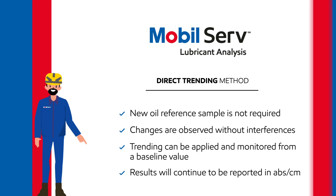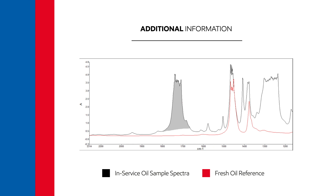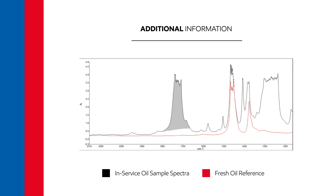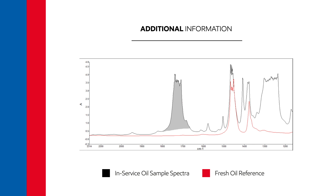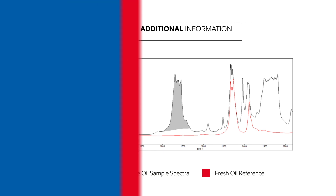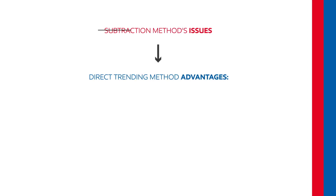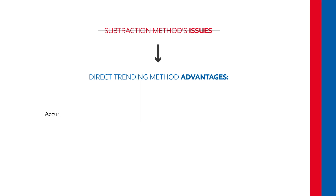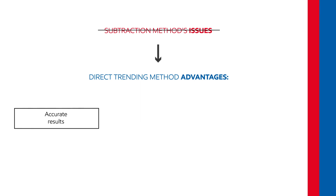So how does direct trending work? Instead of taking the peak height and subtracting it from a reference, the direct trending method calculates the peak area in the known region for the specific property being analyzed. By eliminating the reference entirely, you remove the possible interference by selecting a specific reference, which ensures results are able to be trended.